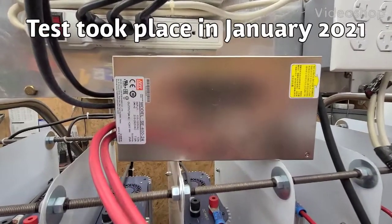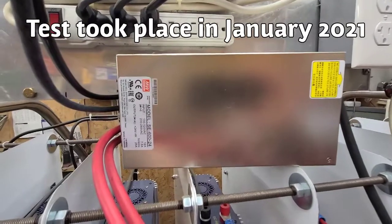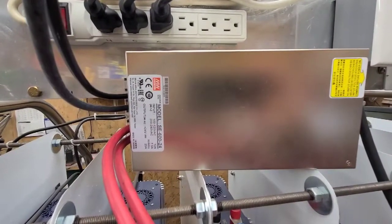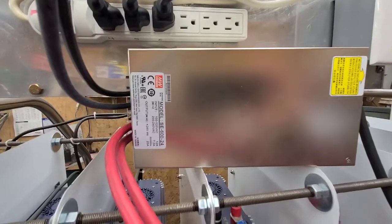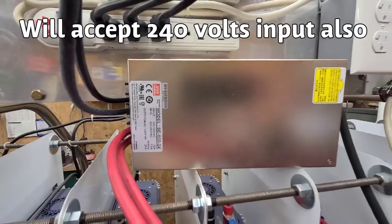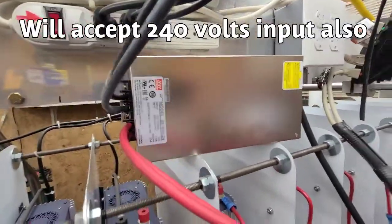So this is a test. What you're looking at here is a 600 watt 24 volt DC power supply. It takes 120 volts on the input side and puts out 24 volts DC up to 600 watts on the output side.